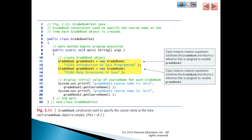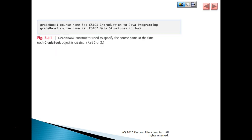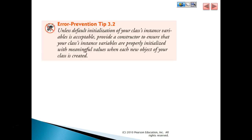Here we have gradebookOne and we also have gradebookTwo. The class instance creation expression initializes the gradebook and returns a reference that is assigned to the variable gradebookOne. GradebookOne's course name is CS101, Introduction to Java Programming. GradebookTwo's course name is CS102, Data Structures in Java. Unless default initialization of your class instance variable is acceptable, provide a constructor to ensure that your class instance variables are properly initialized with meaningful values when each new object of your class is created.